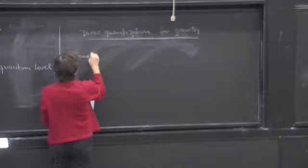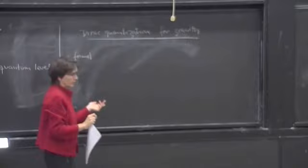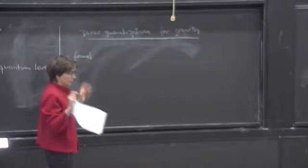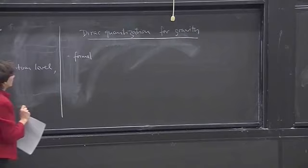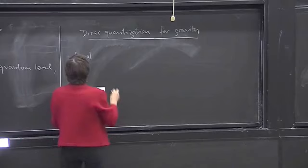However, what one does is usually one just proceeds in analogy with finite dimensions, and one sees then a formal quantization. That just means, if everything goes well, if you can make all these relations well-defined, then things just might go through. But of course, there's absolutely no guarantee that this happens.